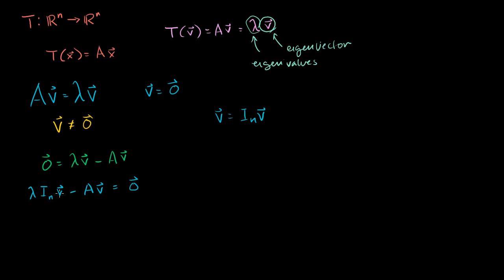Now, I have one matrix times v minus another matrix times v. Matrix vector products have the distributive property. So this is equivalent to the matrix lambda times the identity matrix minus A times the vector v, and that's going to be equal to 0. This is just some matrix right here. The whole reason why I made this substitution is so that I could write this as a matrix vector product instead of just a scalar vector product. That way I was able to essentially factor out the v and write this whole equation as essentially some matrix vector product equal to 0.